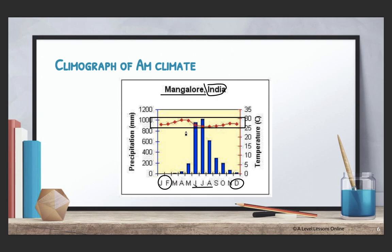These are the trends you need to take note of when describing a climograph. Always look at: number one, rainfall; number two, temperature; and number three, the trends — which months have higher rainfall, and when you add everything up, how much does it total? That would be your climograph answer for data response questions.